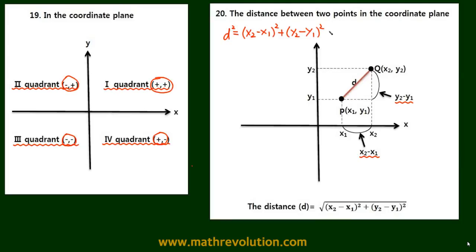Then using the Pythagorean theorem, the distance d will equal the square root of x2 minus x1 squared, plus y2 minus y1 squared. Hence the equation at the bottom.